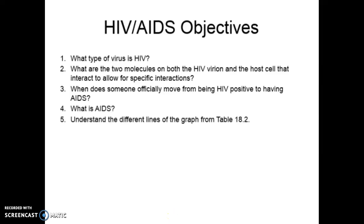For HIV/AIDS, we're going to look at what type of virus HIV is, and then it's very important to understand how the HIV virion is able to specifically interact with the human host cells. That's going to be because of specific molecules on both the surface of the HIV virion and the human T cells. There is also a big difference between when someone is HIV positive and when someone is actually classified as AIDS. We're going to look at a couple of diagrams, including the graph in table 18.2.